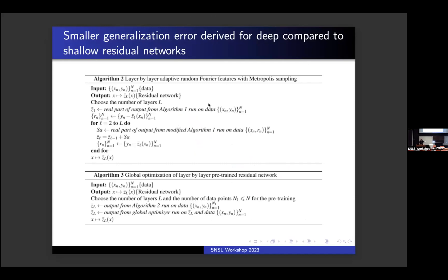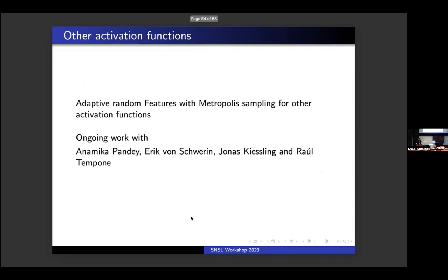Here is the layer-by-layer algorithm: input data, get the residual neural network, choose number of layers L. Run the adaptive random Fourier features algorithm for the first layer. Then plug in the difference Y - Z_1 as the new target and run adaptive random Fourier features on that data, continuing layer by layer. After pre-training, run any global optimizer like Adam. When we first presented the adaptive random Fourier features algorithm, the question arose: who uses shallow networks? The next question was: who uses trigonometric activation functions — how about others? That's where we are right now.